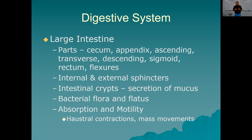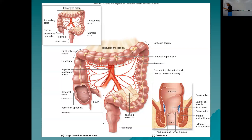The longitudinal muscle of the large intestine is condensed into a strip called the taenia coli, running the whole length. Looking at the large intestine, you can see the cecum, ileocecal valve, vermiform appendix, ascending colon, right colic (hepatic) flexure, transverse colon, left colic (splenic) flexure, descending colon, sigmoid colon, rectum, and anal canal. Running along the taenia coli are little bits of fat called omental appendages, also known as epiploic appendages.